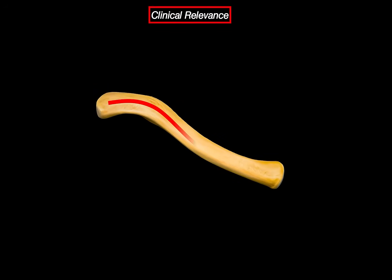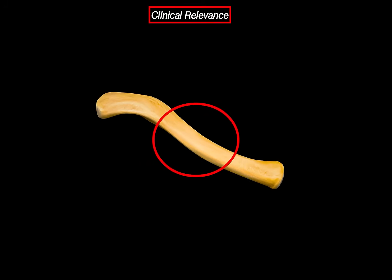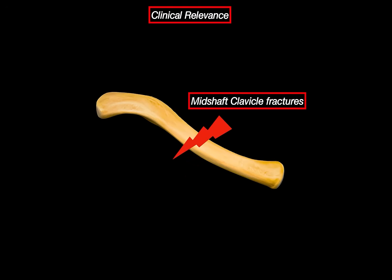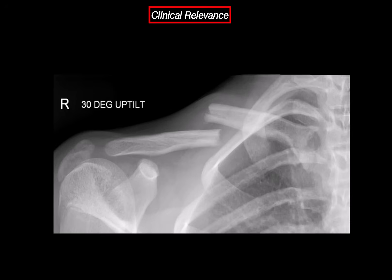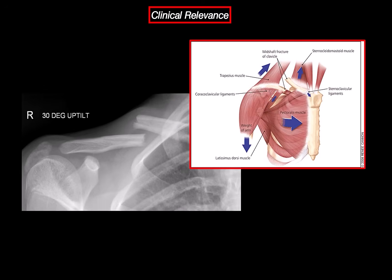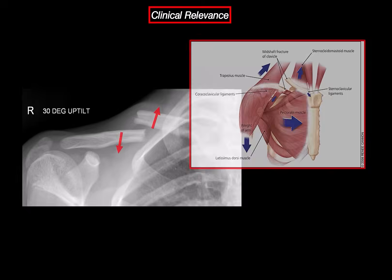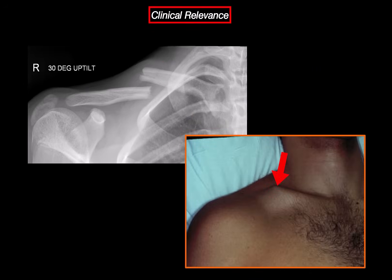The S-shape gives the clavicle stability to absorb force, but it also makes it vulnerable. The curve creates a natural weak point, usually in the middle third where it's thinnest and not well protected by muscle — that's why this is the most common site of clavicle fractures. Clavicle fractures are very common, especially in sport injuries or traffic accidents, accounting for about 5% of all adult fractures. It most commonly happens when a person falls on an outstretched hand or receives a direct blow to the shoulder. That force travels up through the arm and the clavicle snaps under pressure. When the clavicle breaks, the medial fragment is often pulled upwards by the sternocleidomastoid, while the lateral fragment drops downwards and forward due to the weight of the arm and the pull from the deltoid and gravity. Since it's so close to the surface, you will often see a clear deformity of the skin.